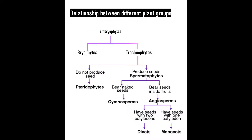So you ask yourself these four questions to know which land plant you are dealing with. Embryophytes break down into bryophytes — non-vascular plants such as hornwort, liverwort, and mosses — or tracheophytes, the vascular plants. Tracheophytes break into seedless plants or seed-bearing plants. Seed-bearing plants split into gymnosperms with naked seeds or angiosperms with covered seeds. Angiosperms are then divided into monocotyledons, with one cotyledon, or dicotyledons like beans and maple trees, with two cotyledons.